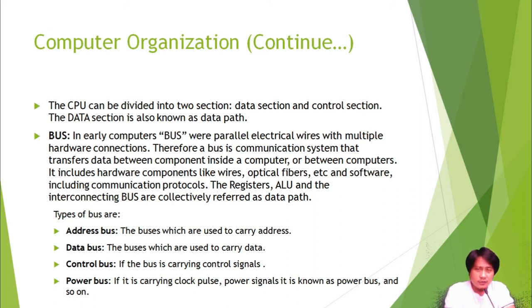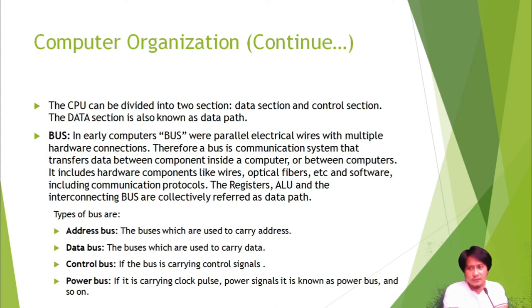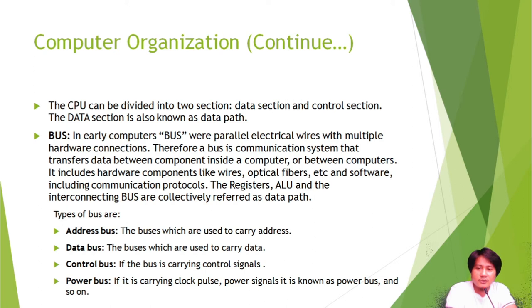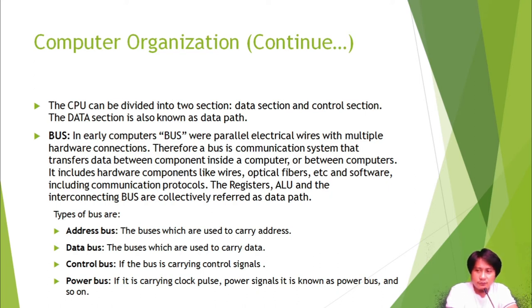The CPU can be divided into two sections: the data section and the control section. The data section is also known as the data path. Within this section, we have the bus. In early computers, buses were parallel electrical wires with multiple hardware connections — like the first computer created by Charles Babbage, which had many electrical wires connecting one physical hardware to another.